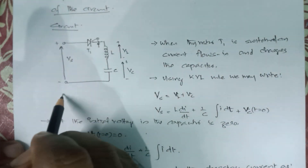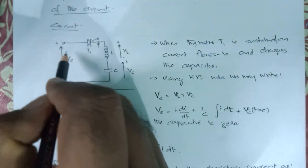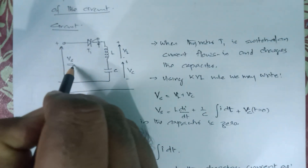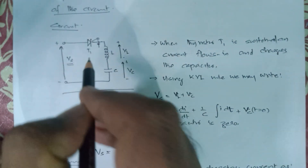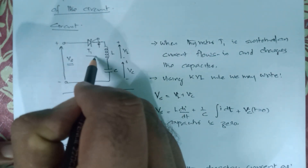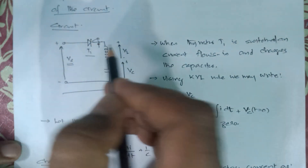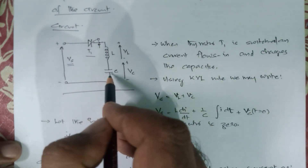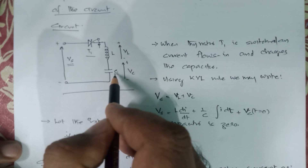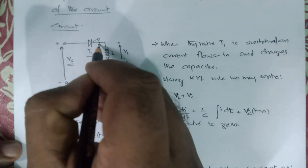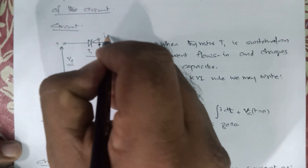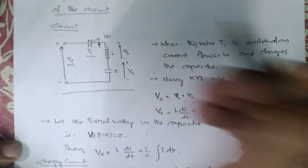The circuit is drawn here. We have a supply voltage Vs, which is a DC voltage. This is a thyristor through which the current passes. The current passes through the inductor and comes to the capacitor and charges the capacitor. So the current I is called the charging current. We will write this current as I(T) because it changes with time.